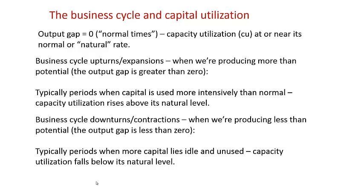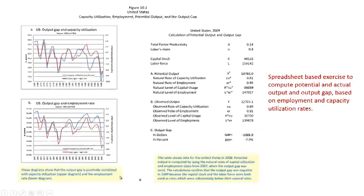So let's think about the relationship between the business cycle and capital utilization. When the output gap is zero — normal times — capacity utilization tends to be at or near its natural rate. During business cycle upturns or expansions, when we're producing more than potential, capital is used more intensively than normal and capacity utilization rises above its natural level. During downturns and contractions, when we're producing less than potential and the output gap is less than zero, capital lies idle more than normal and capacity utilization falls below its natural level.